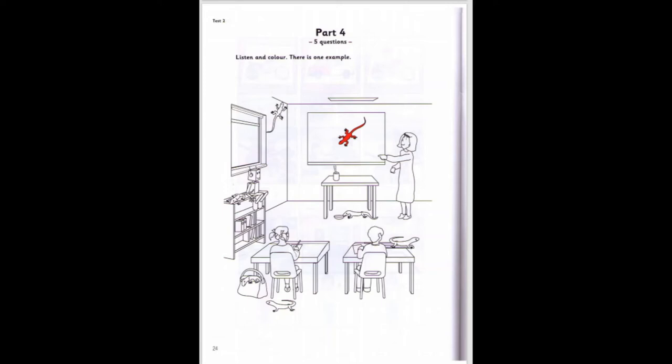Five. Can you see the ruler on the boy's desk? Yes, and there's a lizard on it. Yes. Now colour it brown. OK. A brown lizard on the ruler. There. Thank you, that's very good.